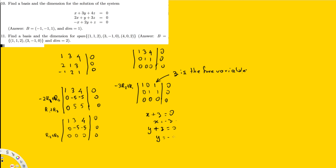From the equations: x = -z and y = -z. Arranging as a vector (x, y, z), we get (-z, -z, z), which factors as z(-1, -1, 1). Since the basis should not include the scalar z (which can be any real number), the basis vector is (-1, -1, 1).